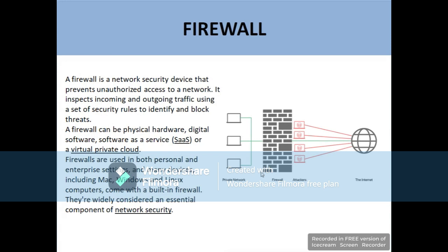If you just see the diagram here, this is the private network — meaning computers, laptops, and devices are connected here. And this is the internet, meaning anything outside the private network. Here we install the firewall, which basically sits between the private network and the internet.